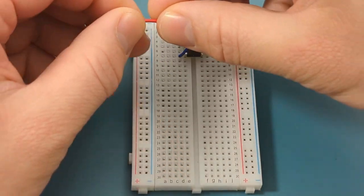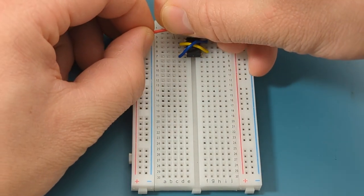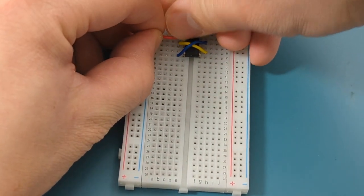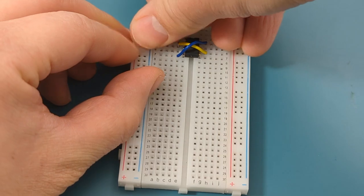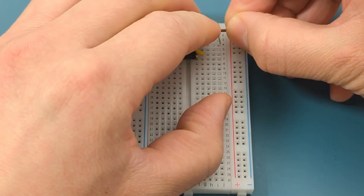A jumper wire connects pin 1 or ground to the negative rail. A jumper wire connects pin 8 or VCC to the positive rail.